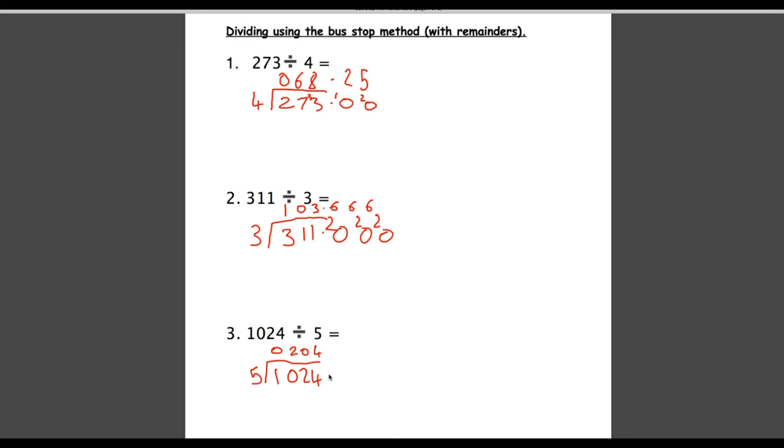So we can leave our answer as a decimal again by putting a point. We have 4 remainder so we'll carry that over. How many 5s go into 40? The answer is 8. So our answer is 204.8.